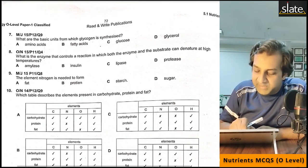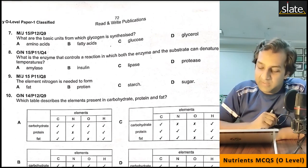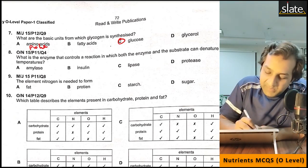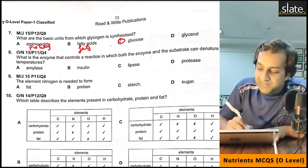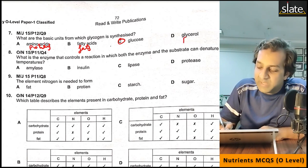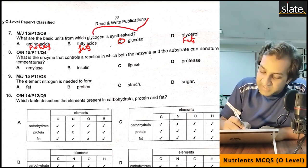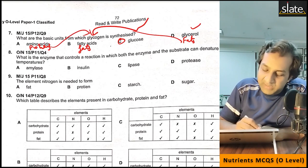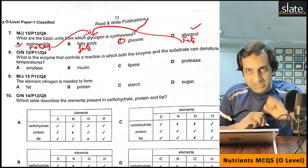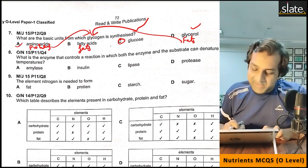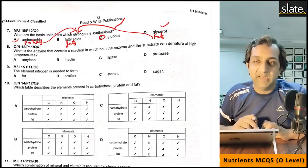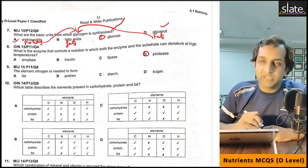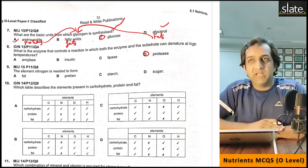Question: which basic unit is glycogen synthesized from? Glycogen is made up of glucose. Amino acids make up proteins. Fatty acids and glycerol make up fats or lipids. Also remember: proteins and enzymes are denatured at high temperatures.